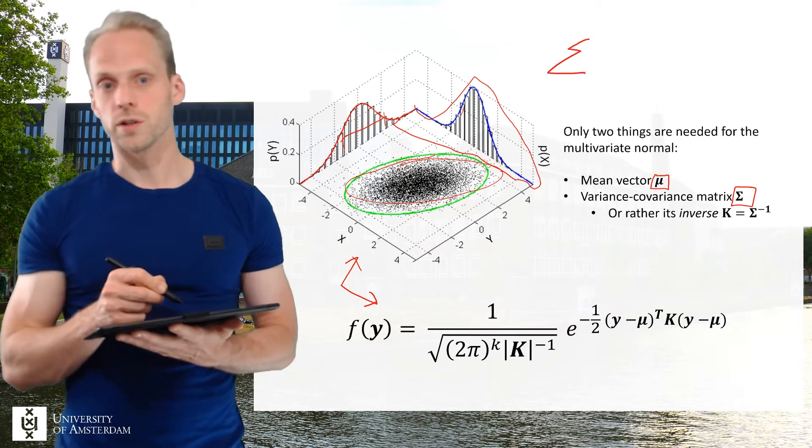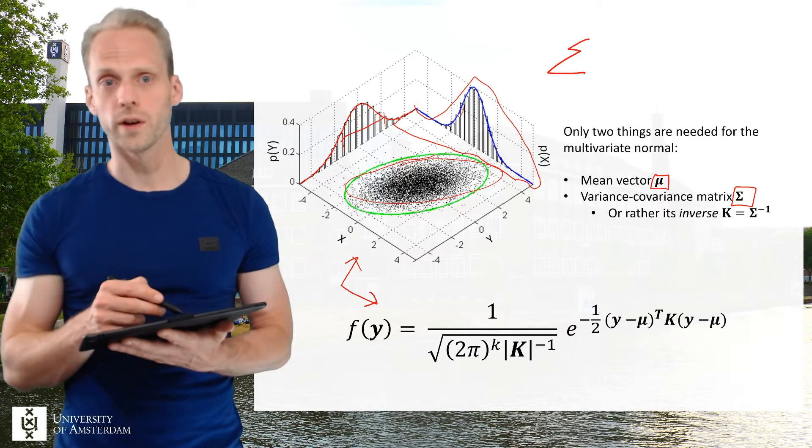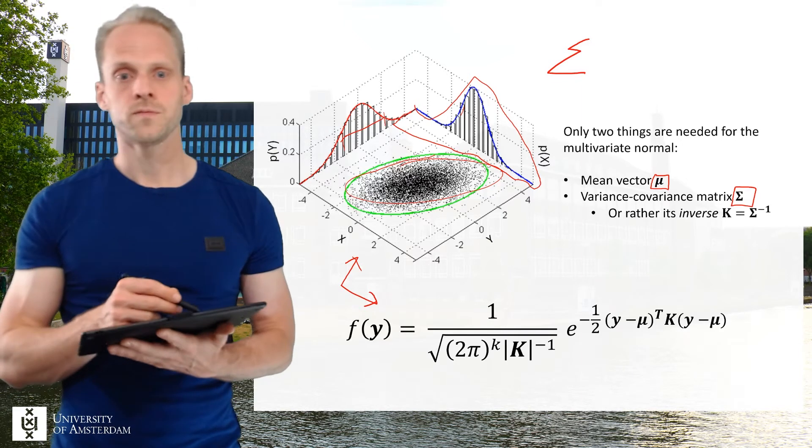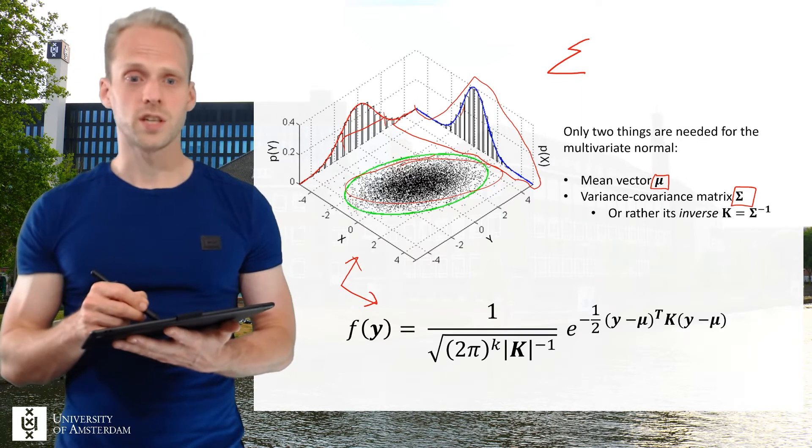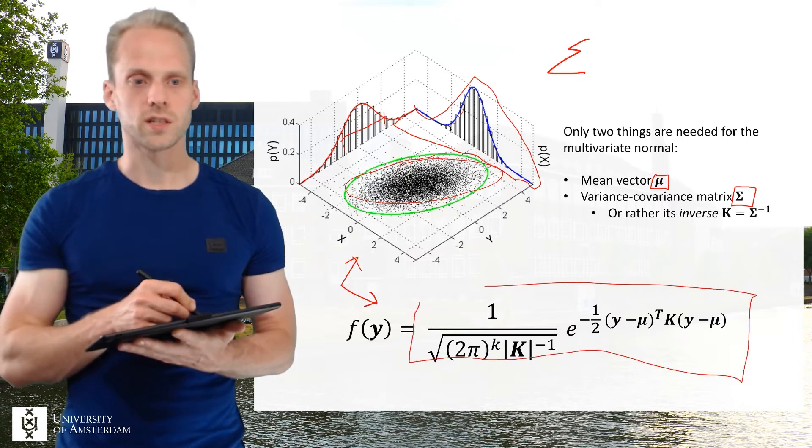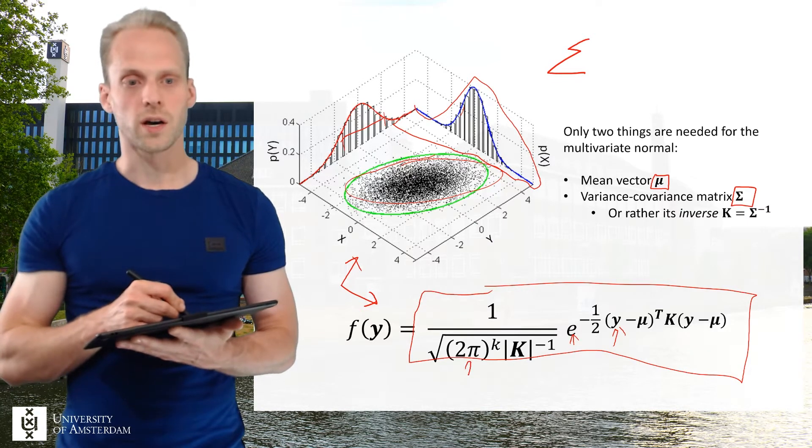Now sigma is very important because this encodes all variances of the data and also all covariances and relationships between any two variables in the data set. If you know mu and you know sigma then you know everything in this model because the rest are observed values like this y here is observed, this e is a constant, this pi is constant, this k is number of variables.